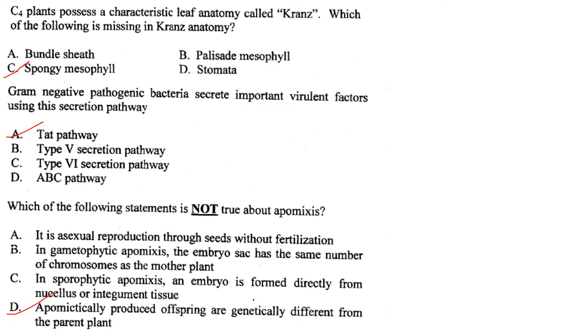C4 plants possess a characteristic leaf anatomy called Kranz anatomy. Spongy mesophyll is missing in Kranz anatomy. Answer is option C.